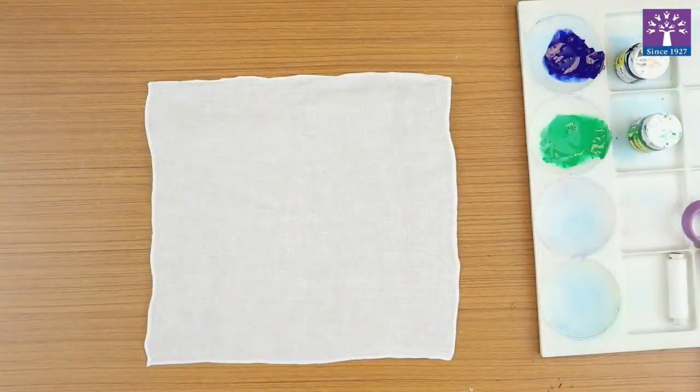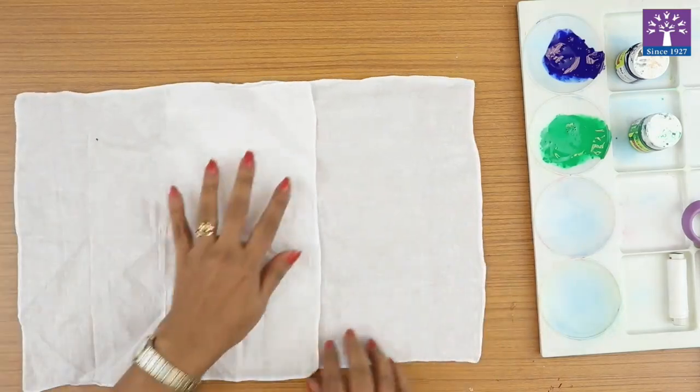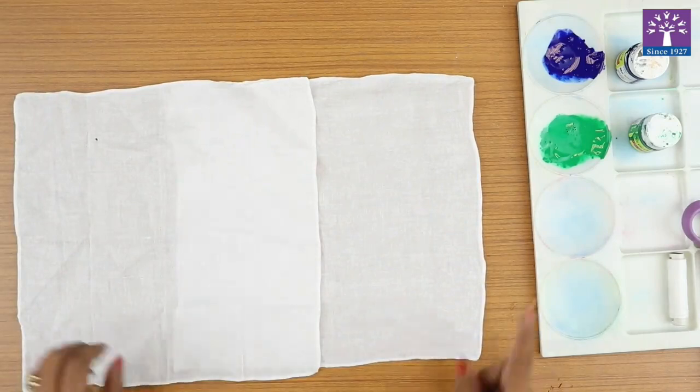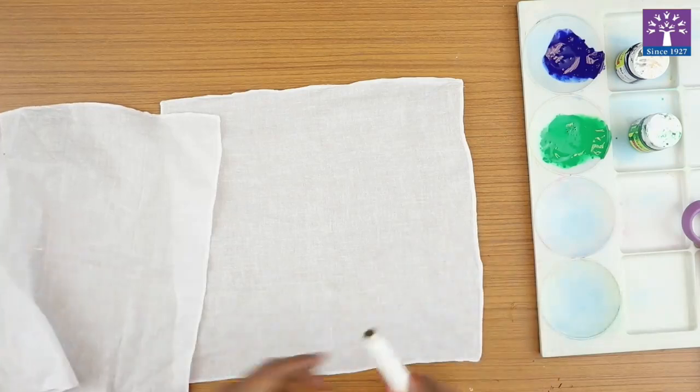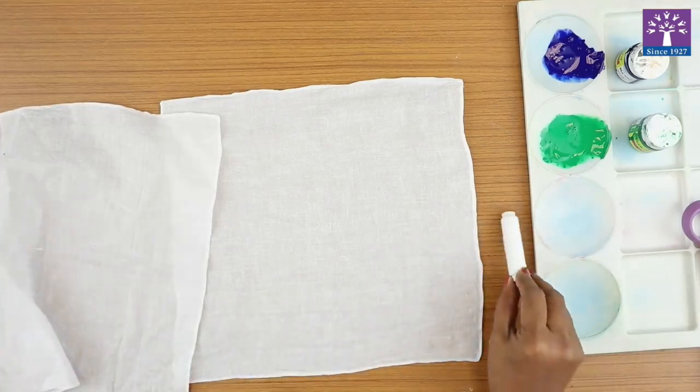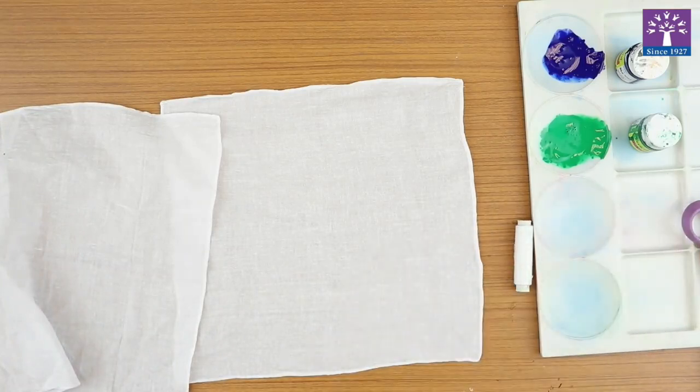Hello friends, today's activity is tie and dye. You will need two white cloths or kerchiefs, acrylic paint, and thread. This white thread is given to you in the kit along with one bottle of acrylic color.